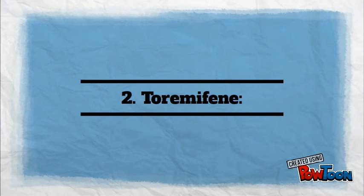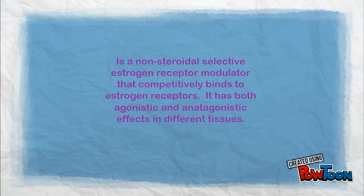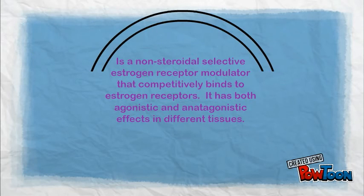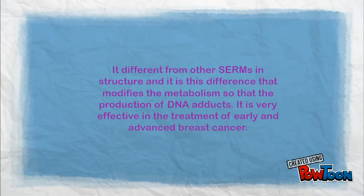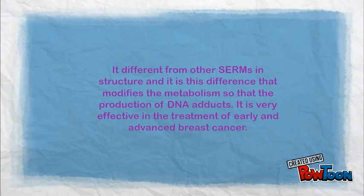Secondly, toremifene. It is a non-steroidal selective estrogen receptor modulator that competitively binds to estrogen receptors. It too has both agonistic and antagonistic effects in different tissues. It differs from other selective estrogen receptor modulators in structure, and it is this difference that modifies the metabolism so that the production of DNA adducts is altered.